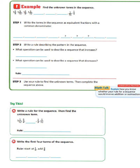Now let's look at another example. Find the unknown term in the sequence: 1 and 3/4, 1 and 9/16, 1 and 3/8, 1 and 3/16. We need to find the next three terms before ending with 7/16 and 1/4. Step 1 says to write the terms as equivalent fractions with a common denominator. We see denominators of 4, 16, and 8, so we know the common denominator would be 16.